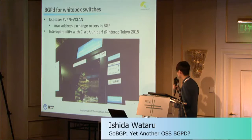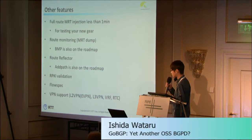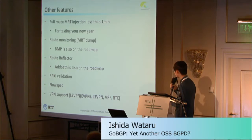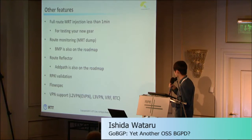Other features include: full route MRT injection, which can be done in less than one minute — useful for testing new gear to verify it can handle a full routing table. There is also route monitoring with MRT dump, and BMP is currently supported. Route reflector is available. Add-path is on the roadmap and will be added soon. We also support RPKI validation, flow spec, VPN including eVPN and L3VPN, and we have VRF support.